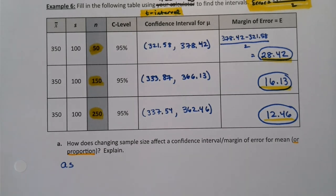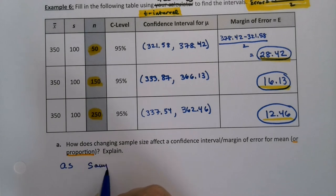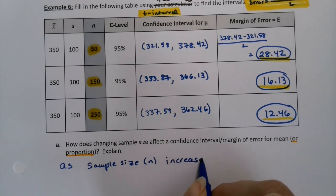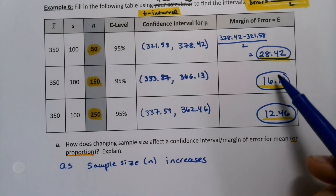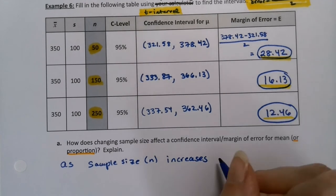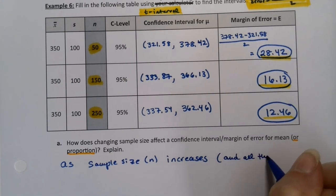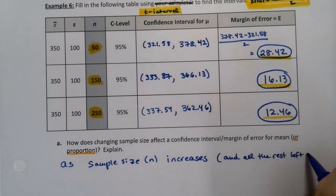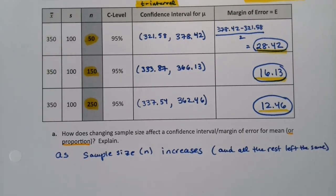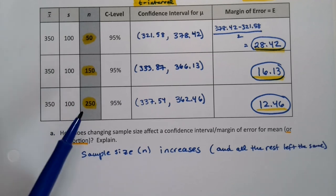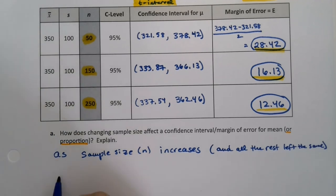Alright. So as sample size increases, so as sample size, which is n increases, as it goes up, the margin of error decreases. Oh, and all other things are left alone. So what does that mean? That means that I increase the n, but I let the S and the x bar and the confidence level all stay the same. So everything else left the same, but the sample size increases. So if you increase the sample size and everything else is left alone, then the margin of error decreases.